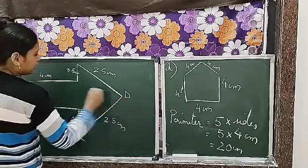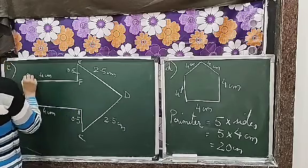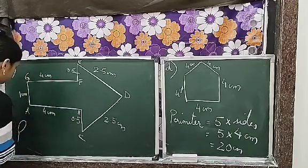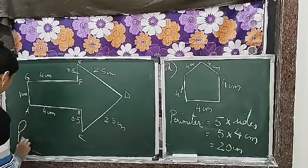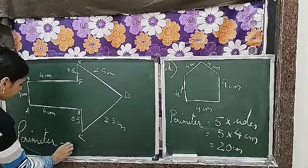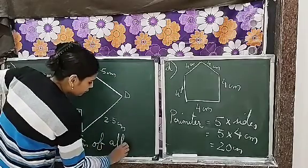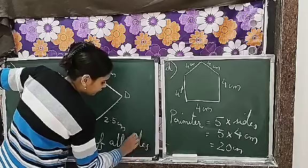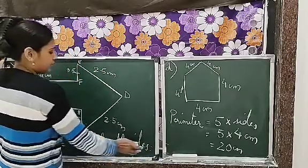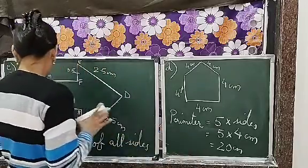2.5 centimeter and 2.5 centimeter. So A, B, C, D, E, F and G. So perimeter, the formula for perimeter is the normal one, sum of all sides. We are going to write that sum of all sides.